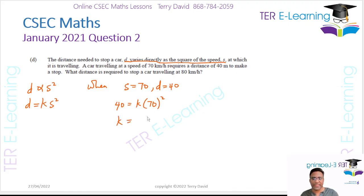So therefore, k is 40 divided by 70². So therefore, k is equal to 0.00816. So you know what k is now. So therefore, your actual formula that you're working with is d equals 0.00816 by s².